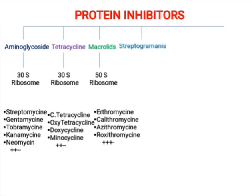Then we have another group known as streptogramins. Streptogramins are antibiotics that also target the 50S ribosomes and inhibit protein synthesis. Examples include quinupristin and dalfopristin. These are often used synergistically, and when used in combination they are effective against bacteremia.